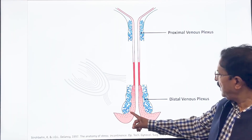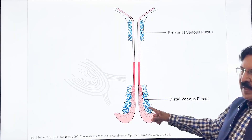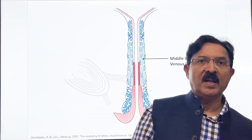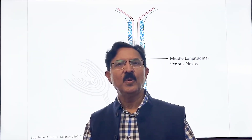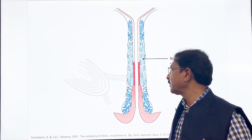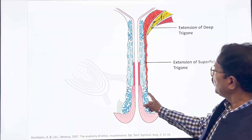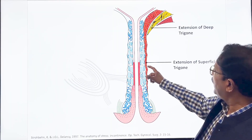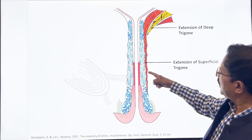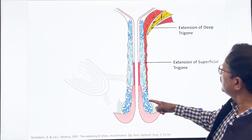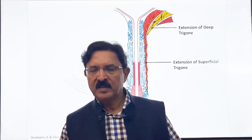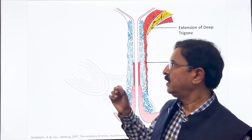Outside the mucosa there are two venous plexuses: a distal venous plexus and a proximal venous plexus, connected by a middle longitudinal venous plexus. This submucosal venous cushion is hormone-sensitive and can dilate and constrict. In the midline posteriorly, there is an extension of the trigone — the superficial trigone as a raffae extending low down behind the urethra, coming up to the distal-most urethra — and the deep trigone which finishes very high up. Just outside this venous cushion in the midline posteriorly is the raffae.